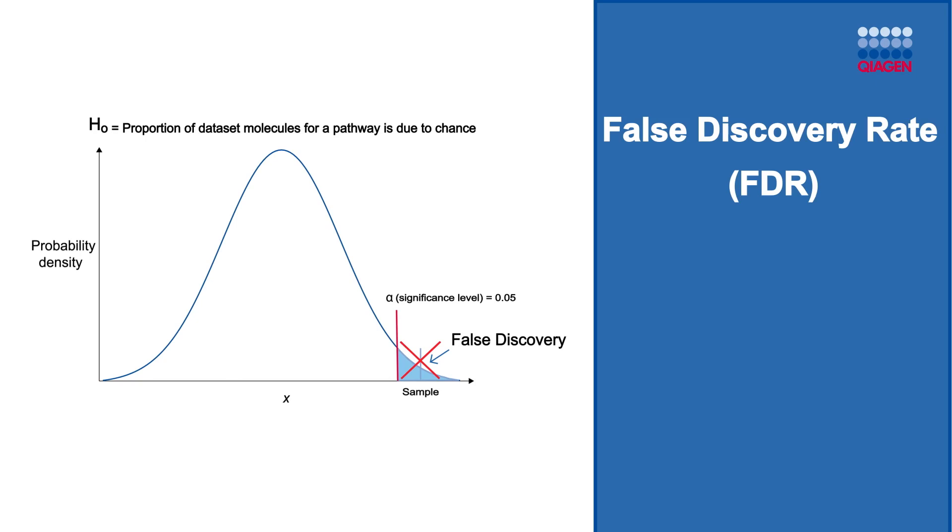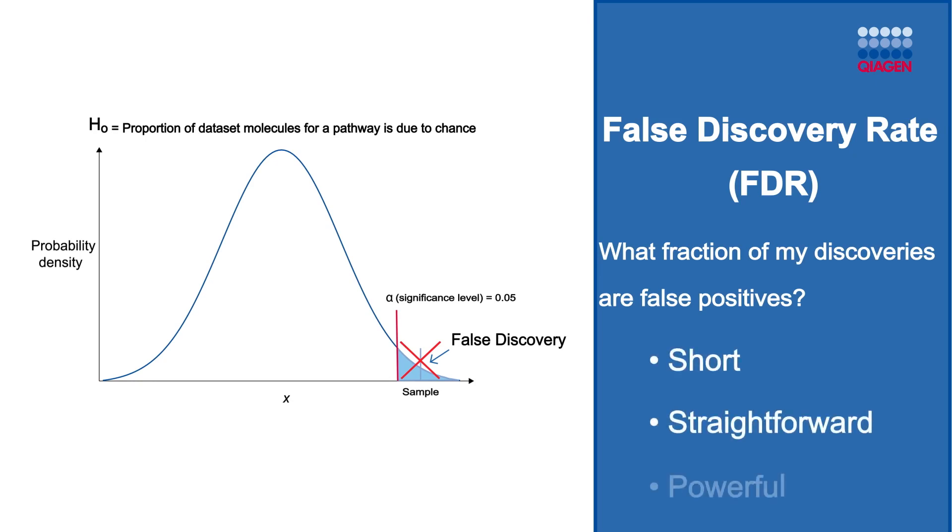You can ask, what fraction of my statistically significant results, in other words, discoveries, are false positives? The FDR-based method is less stringent than the Bonferroni method, but the procedure is short, straightforward, and powerful, so it's often preferred when testing large numbers of hypotheses.